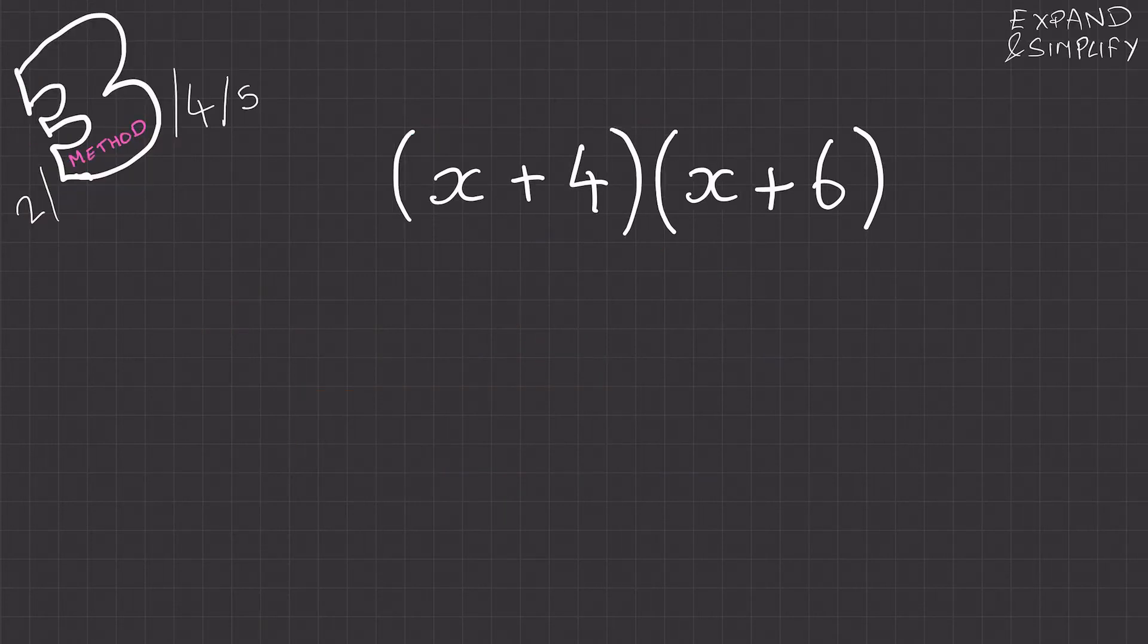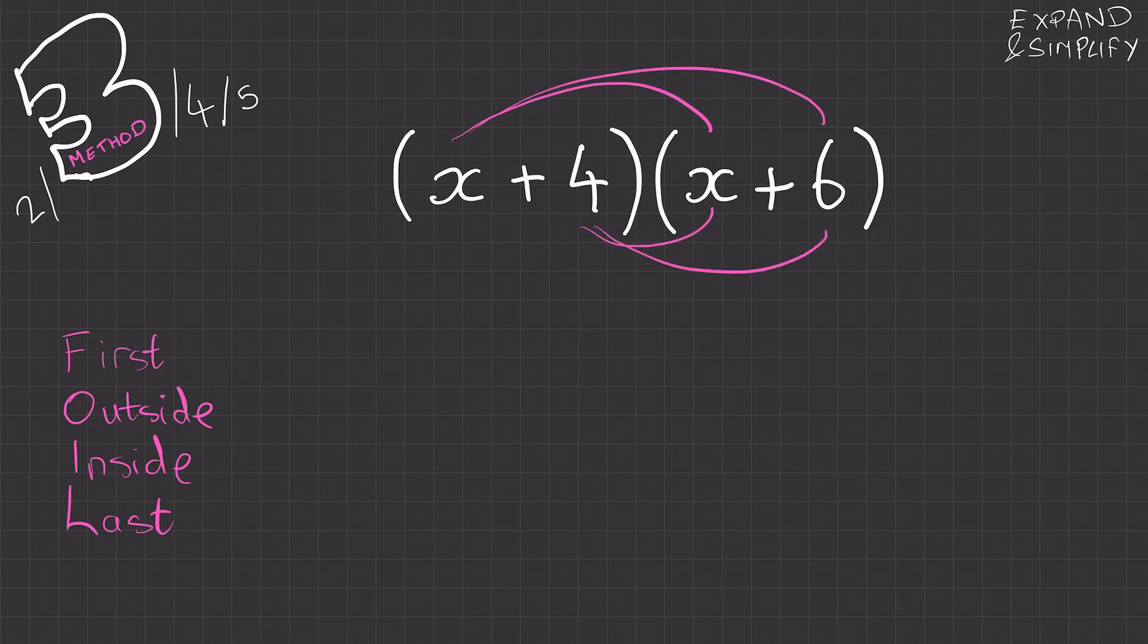Another version of this method is the smiley face. So two eyebrows and nose and the smiley face. And another method is FOIL, which is first outside inside last. Which pretty much just looks the exact same as the claw.